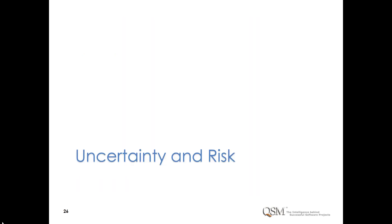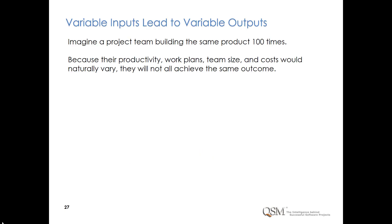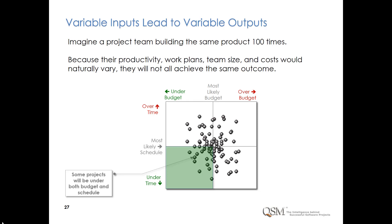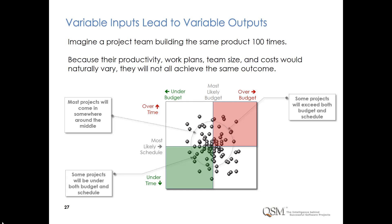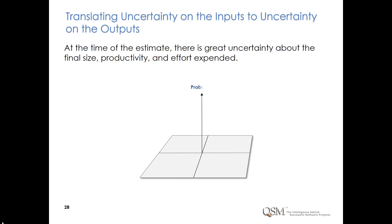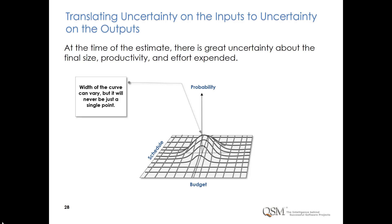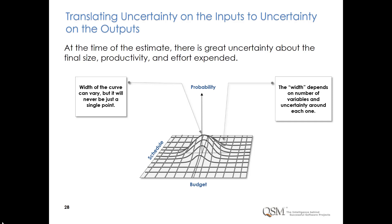Explicitly quantifying uncertainty enables you to manage it, because you can't eliminate uncertainty. Imagine a project team building the same product 100 times — because their productivity, work plans, team size, and costs would naturally vary, they will not all achieve the same outcome. Some will be over budget and some under budget, some over schedule and some under schedule. Most projects will come in somewhere around the middle. SLIM uses Monte Carlo simulation to compute the range of potential outcomes and their relative probabilities. The width of the curve depends on the number of variables and uncertainty around each one.